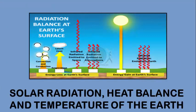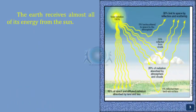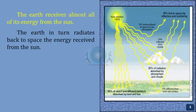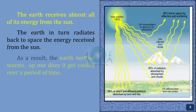Solar Radiation: Heat Balance and Temperature of the Earth. The Earth receives almost all of its energy from the Sun. The Earth in turn radiates back to space the energy received from the Sun. As a result, the Earth neither warms up nor does it get cold over a period of time.